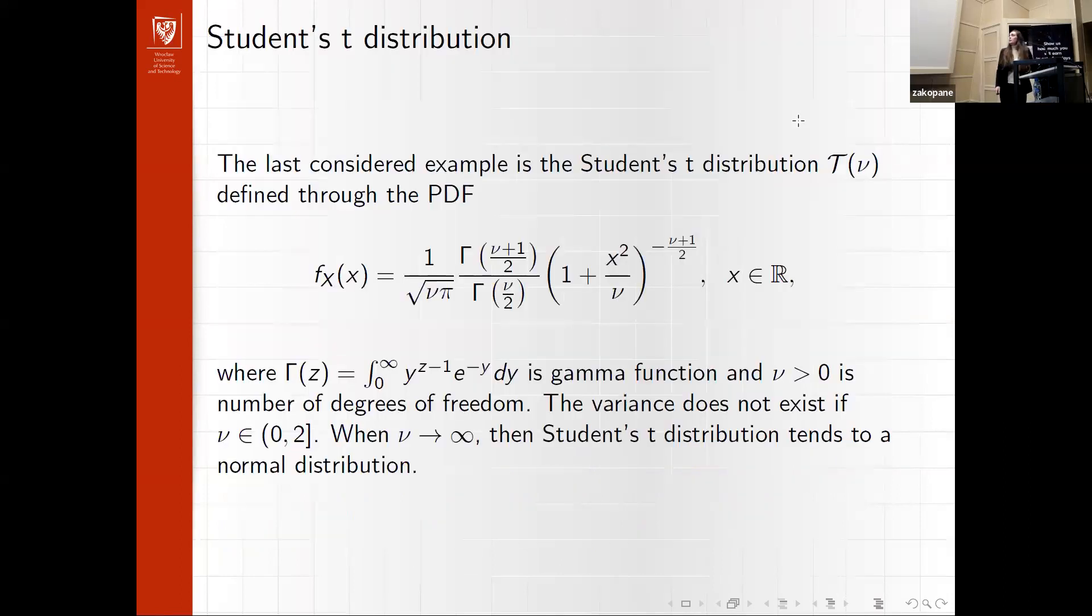Another distribution that we used in this work is Student's t distribution, defined through probability density function. This is parametrized by the number of degrees of freedom. When the number of degrees of freedom is in range from zero to two, we have infinite variance. Meanwhile, when the number of degrees of freedom tends to infinity, the Student's distribution tends to Gaussian distribution.